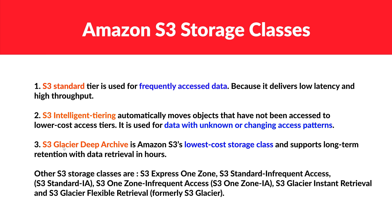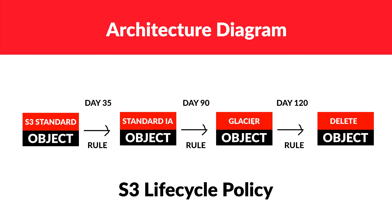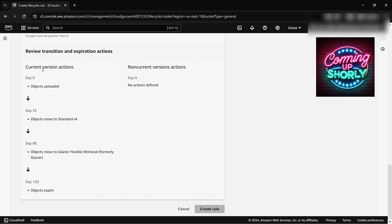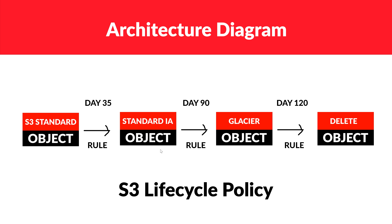Glacier is for data you don't want to access frequently — just for storage purposes, like memories on your computer you store but rarely view. After 120 days we can delete the object. These day values are not fixed; we can set any number of days based on compliance or business needs. We'll see this in the demo itself — not just theoretically, but implemented practically to show how we can save cost in real-life projects.